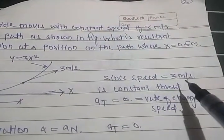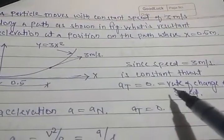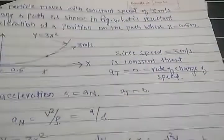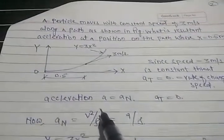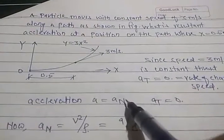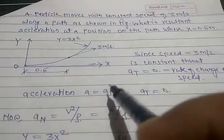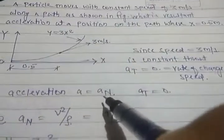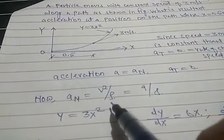Since speed equals 3 meters per second and it is constant throughout, tangential acceleration aₜ equals 0, simply because tangential acceleration means rate of change of speed. So aₜ equals 0, and total acceleration a equals √(aₙ² + aₜ²). But here aₜ is 0, so a equals aₙ only. Now aₙ equals v²/ρ.